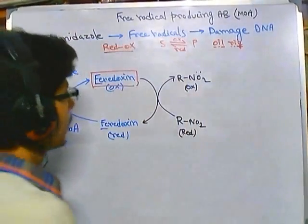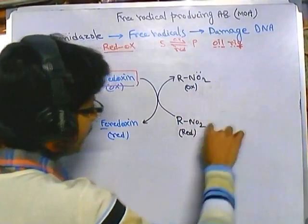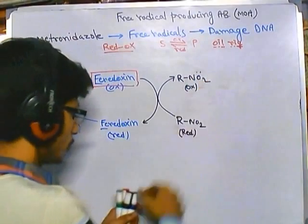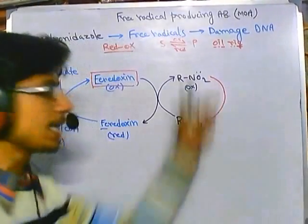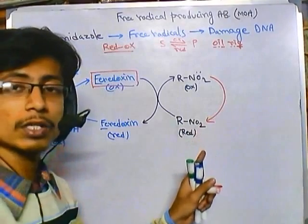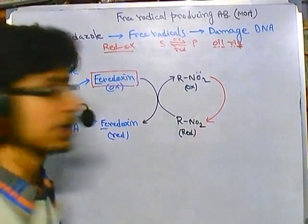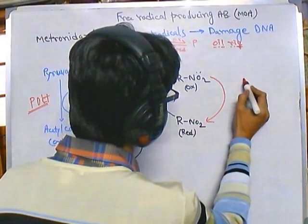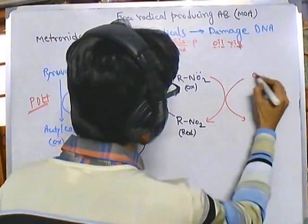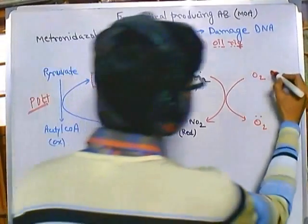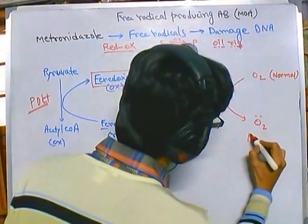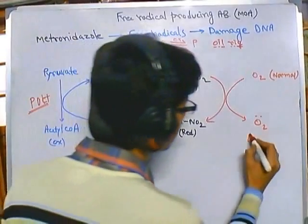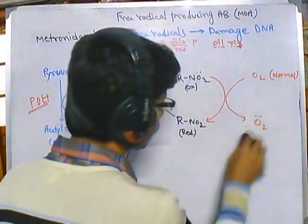From there, this NO₂ will be shifted back to the reduced form — NO₂O minus. As it shifts toward the reduced form, it is also converting something else. It is converting O₂ into a free radical form — this is a normal oxygen molecule being converted into what we call a superoxide.